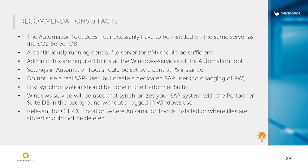Now for the recommendations and facts: install the automation tool on a continuously running virtual machine so you can schedule the synchronization for nighttime, and Performersuite users find a daily updated state when they open the suite. Administrator rights are required. Settings in the automation tool should be set by a central Performersuite instance. Do not use a real SAP user — create a dedicated SAP user, because if a user changes their password the synchronization will fail. The first synchronization should be done in the Performersuite. Windows services are used to synchronize your SAP system with the Performersuite in the background. There is also information available for Citrix environments.